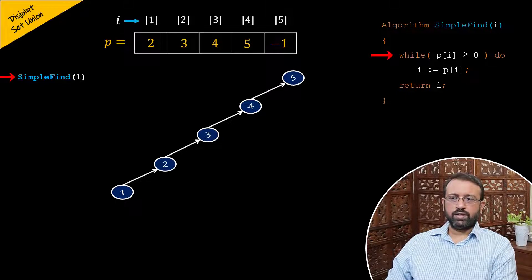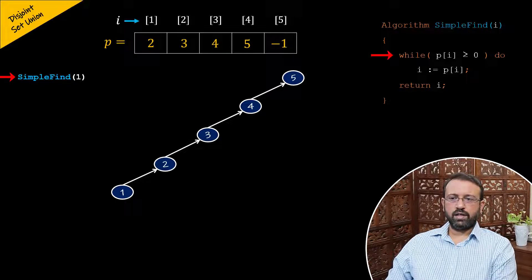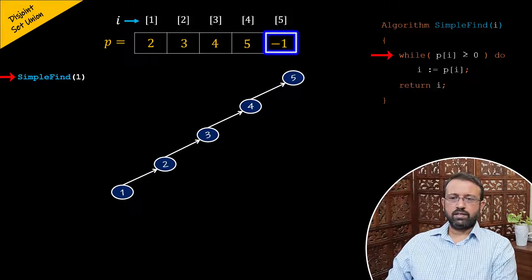Let us first find element one. We will call the simple find algorithm and pass one for parameter i. In this case i is one, so the while loop runs until i becomes five, that is p of i is negative one. Then the simple find algorithm returns the index five, which is the root.